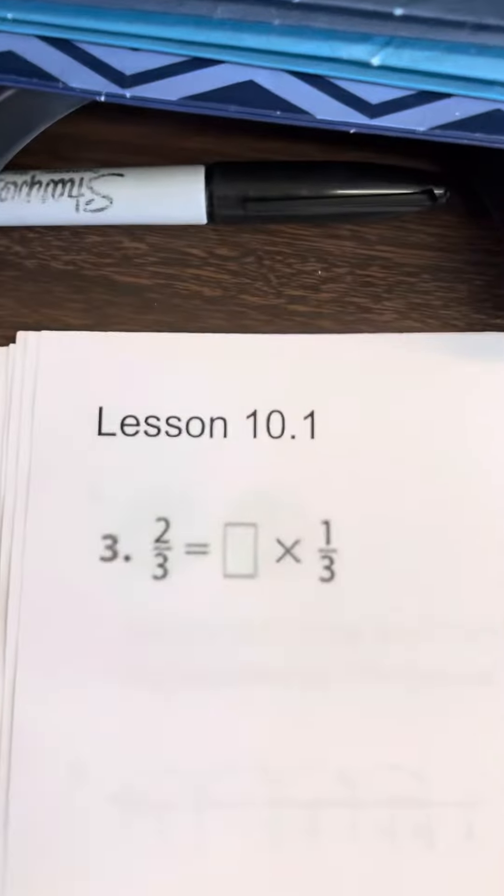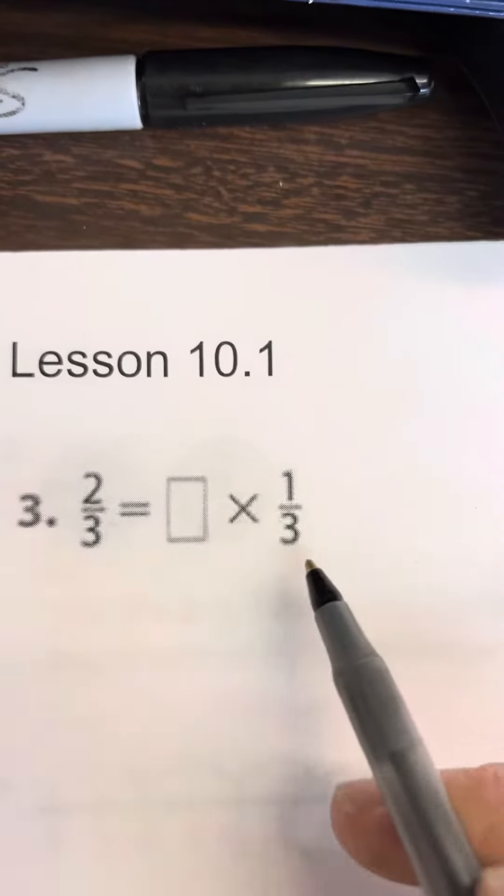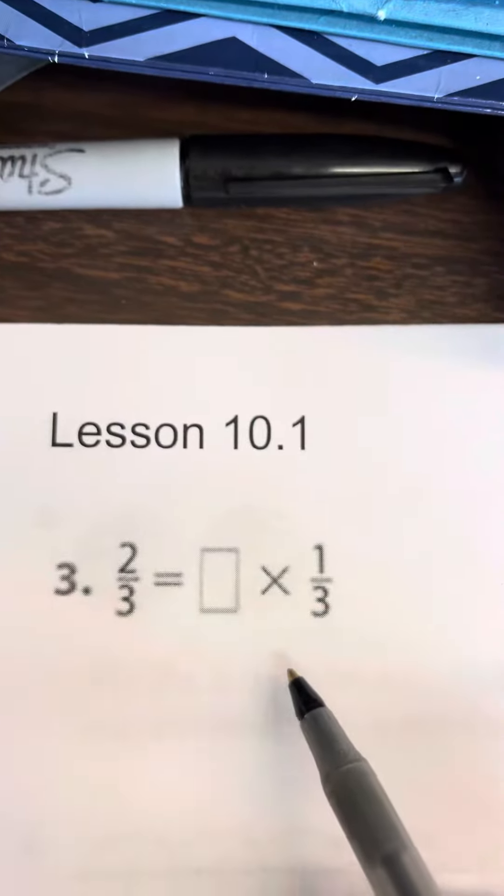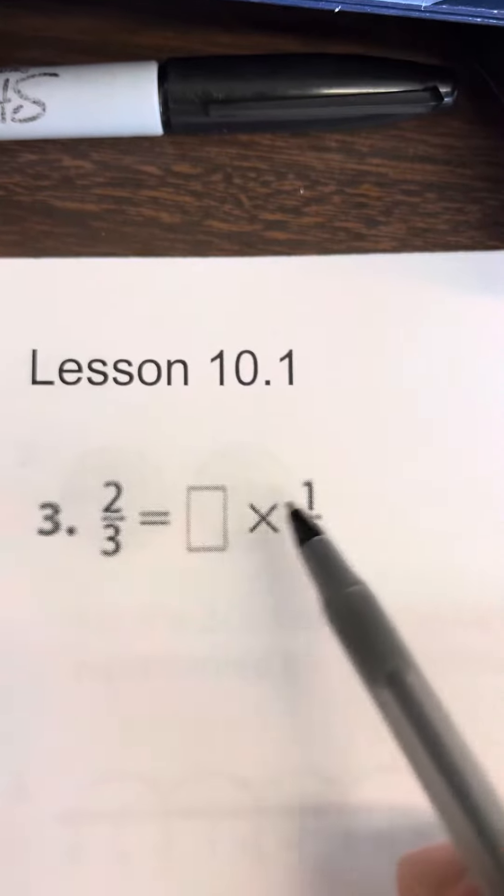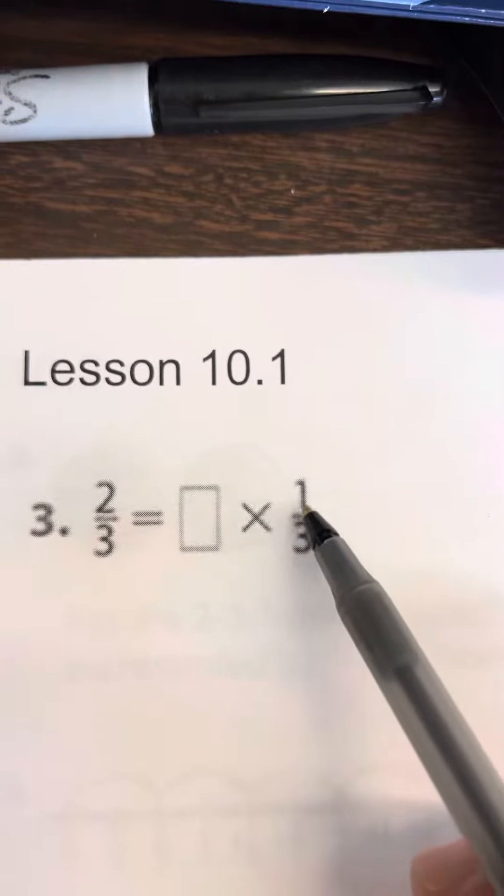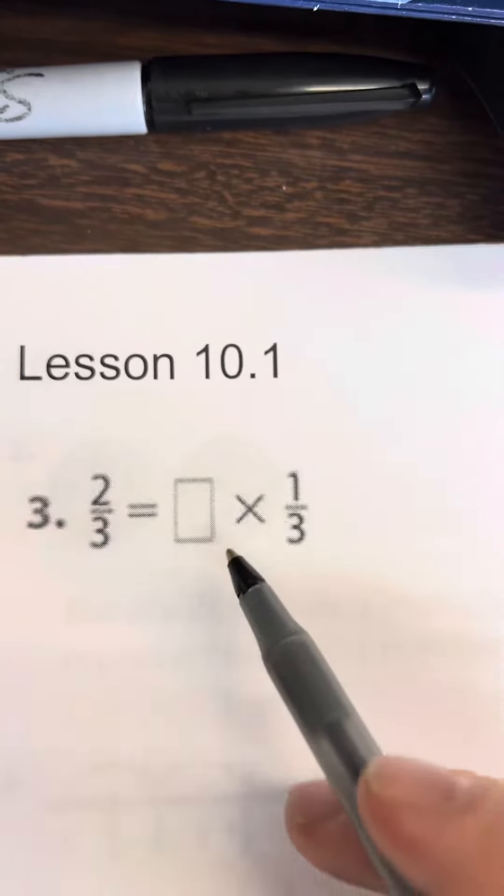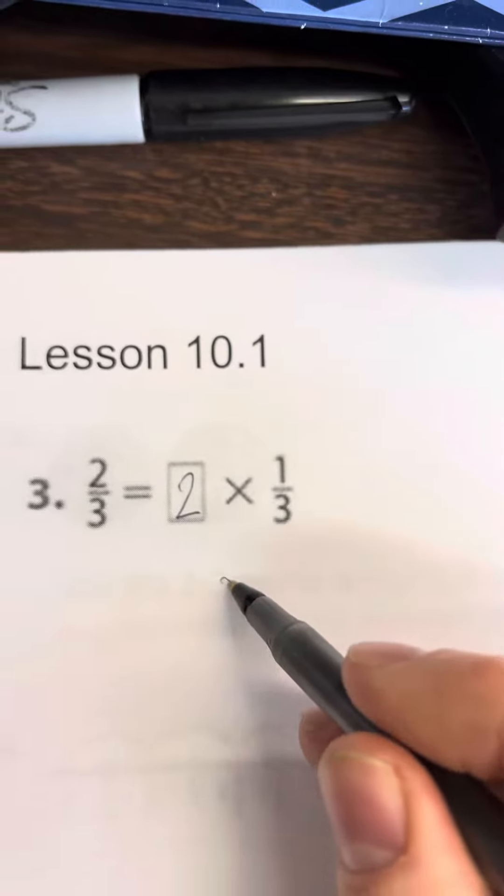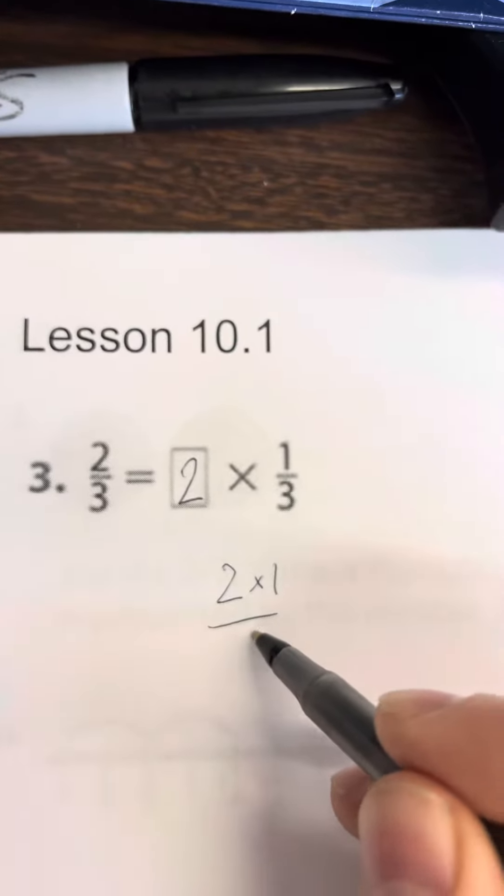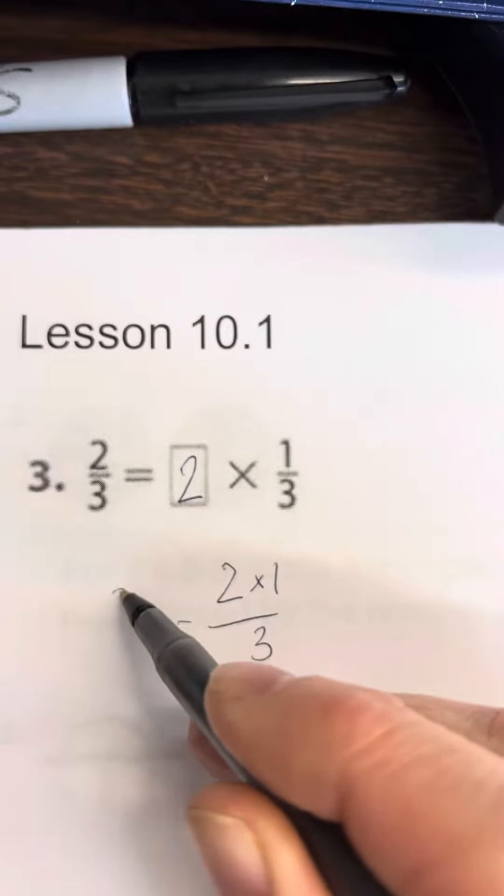For this equation, the important thing to know is that when multiplying fractions, we multiply the whole number times the numerator. So 1 times blank equals 2—the answer is 2—because this really equals 2 times 1 over 3, which equals 2 thirds.